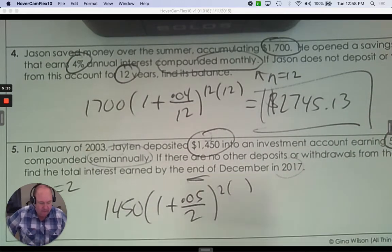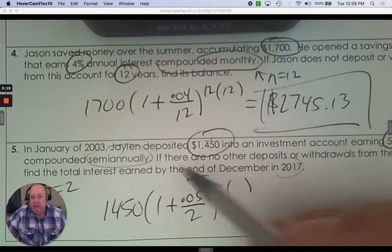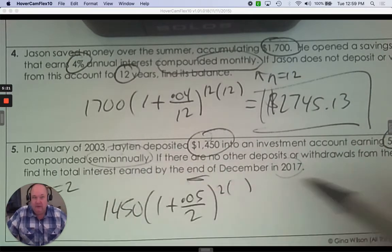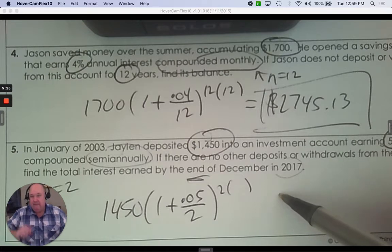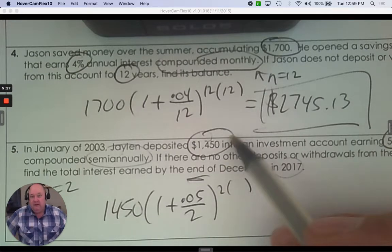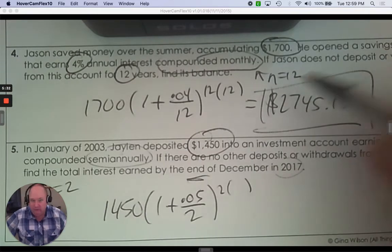So 2003 to December 2017 at the end of the year. So 2003 to 17. That's 14 years plus one more, right? So if it's to the end of the year, we have to add that extra year. There's 15 years there.